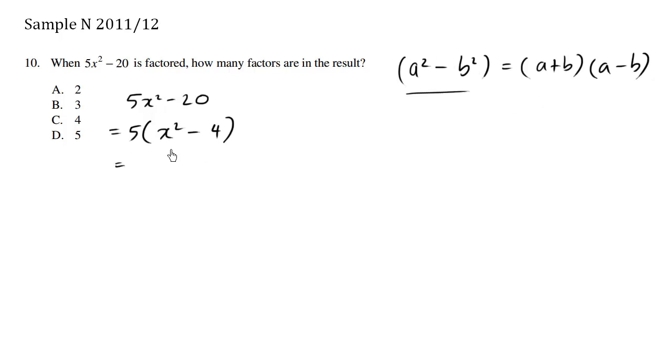So we see that our a value is x and our b value is 2. So we rewrite this as x plus 2, x minus 2. So we can see here that there are 3 factors.